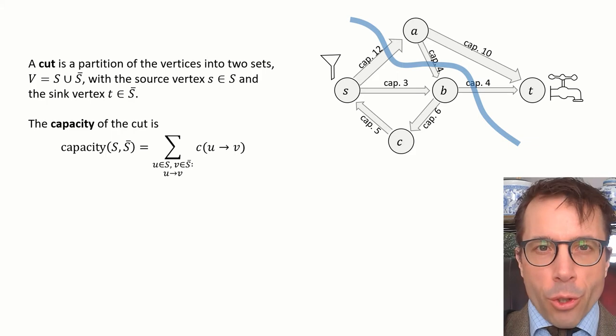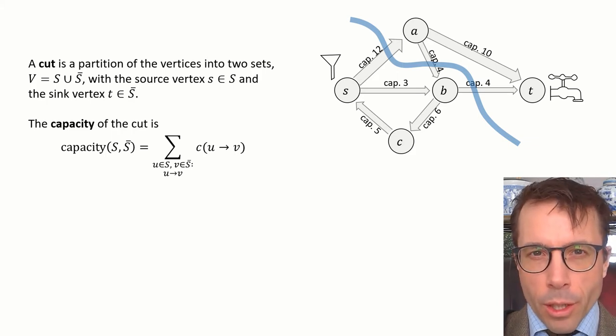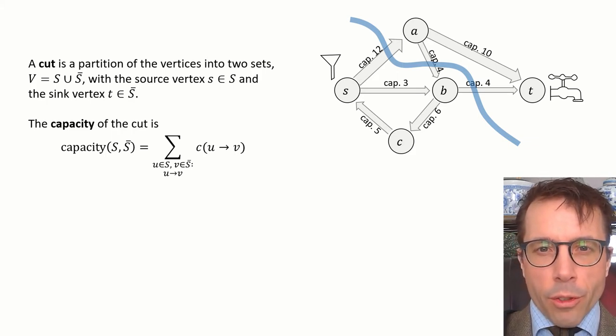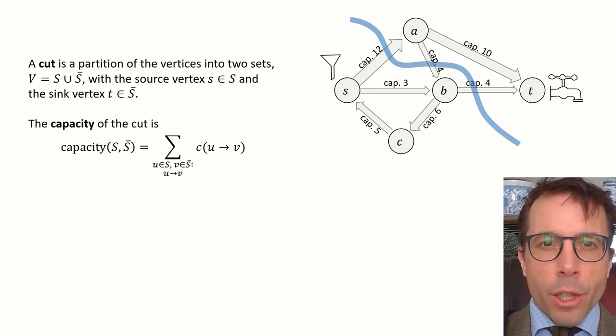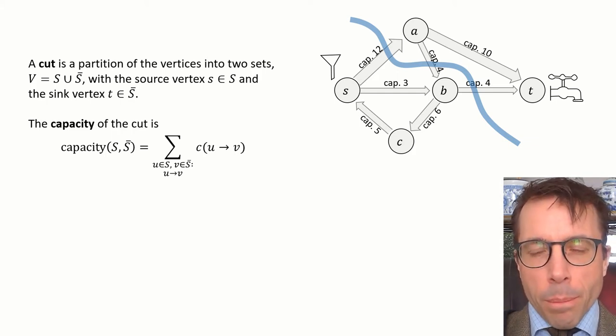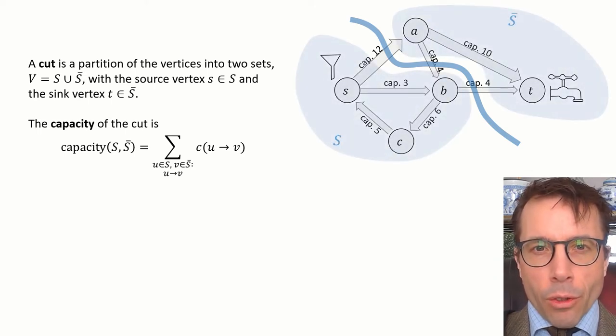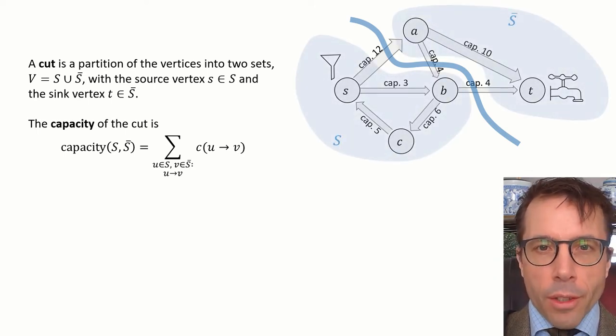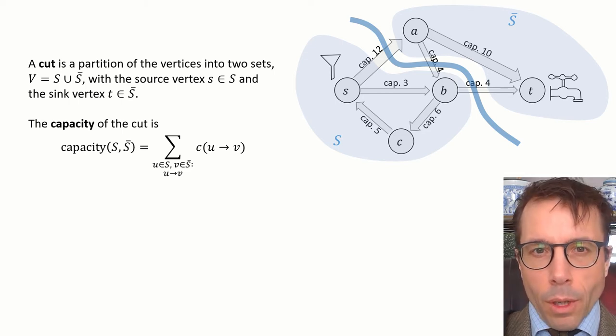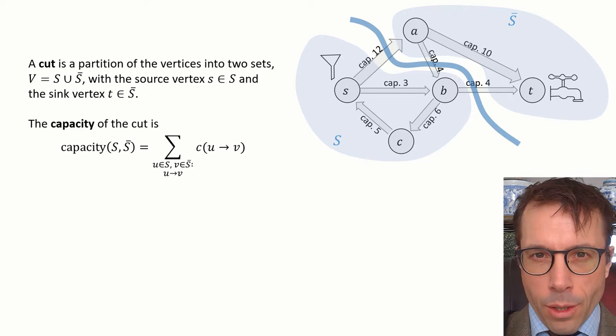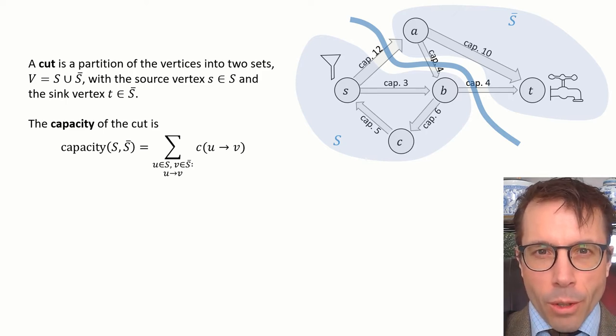On this picture I've drawn a line to depict the cut, but the definition writes it out in terms of sets of vertices. The set definition is easier to work with, but they're basically the same thing. The line is just a line that crosses all the edges between S and S bar. Okay, quiz. What's the capacity of this cut? Pause the video and write down your answer.